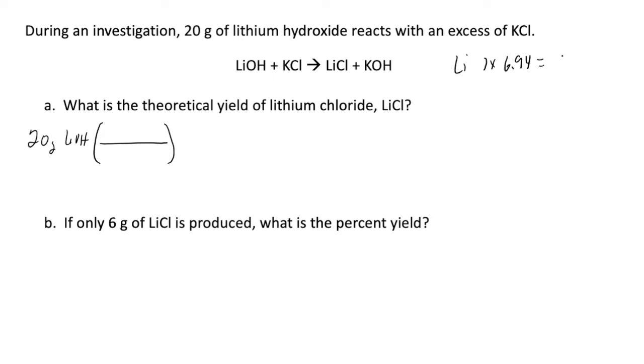So one times 6.94 will give me 6.94 grams per mole of lithium in lithium hydroxide. I have one oxygen times 15.999, and I'm getting these masses from the periodic table.